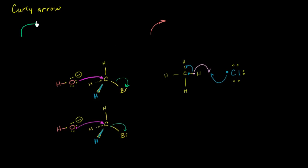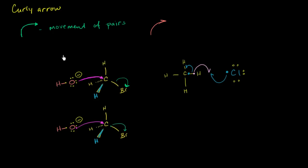The convention is that a full arrow — the typical arrow you're used to seeing — represents the movement of electron pairs. I do a slight variation of that because it helps me account for electrons and conceptualize how things are happening a little bit better. But the general convention is that the full arrow shows movement of pairs.